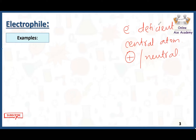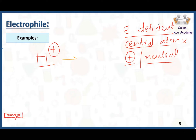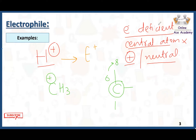Here we have some examples of electrophiles. Electrophiles are electron deficient — their octet of the central atom is not complete, and they can be positively charged or neutral. We have H+ at first. H+ is electron deficient and has a positive charge, so it acts as an electrophile. The next example is CH3+. This CH3 has a positive charge and the carbon here is electron deficient — it has 6 electrons rather than 8 electrons, so its octet is not complete. That is why CH3+ acts as an electrophile.